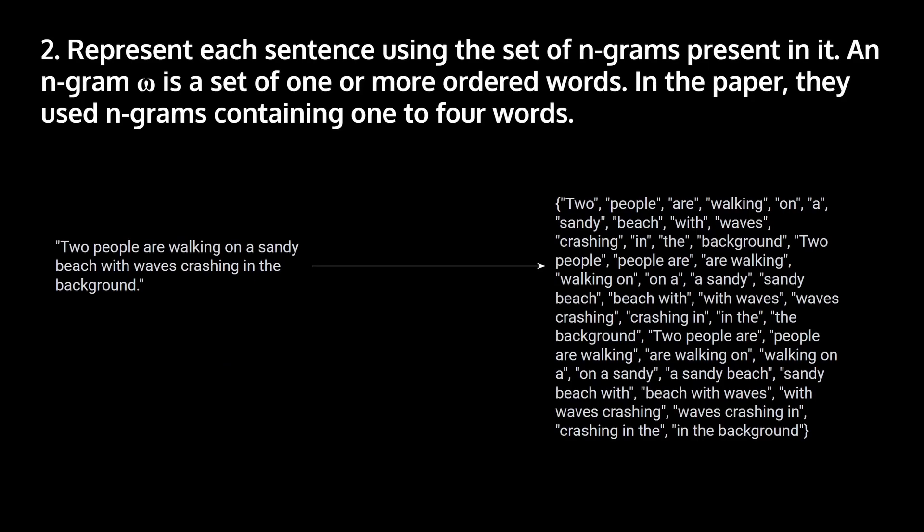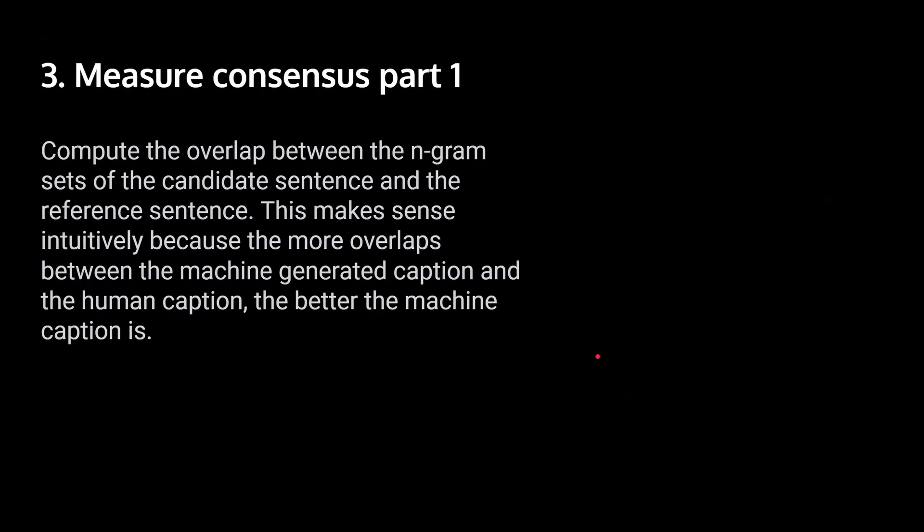And the second step is that we represent each sentence using the set of n-grams present in it. So an n-gram, omega, is a set of one or more ordered words. In the paper, they used n-grams containing one to four words. And the reason behind it is that one to four work the best. So this is an example of what it looks like if you apply n-grams from one to four words. Note that I didn't apply stemming for this. So that's why there was like walking stuff, just walk.